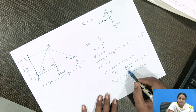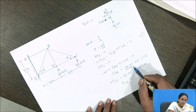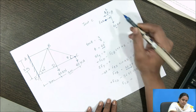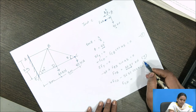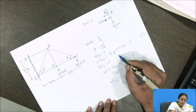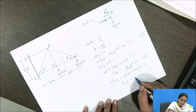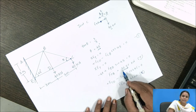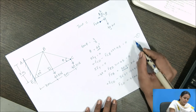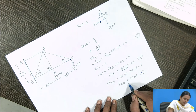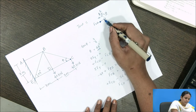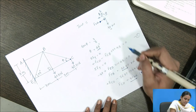Since we got a positive answer for CB, the assumed direction is correct — force CB is tensile. Substituting the value of CB into equation 1, we get force in CD = 40 kN. We again get a positive value, confirming that the assumed nature of force CD as compression is correct.